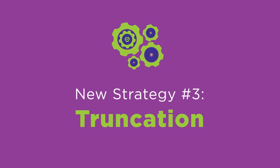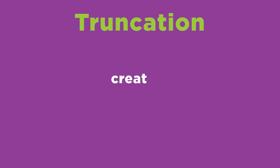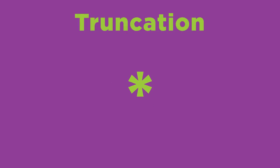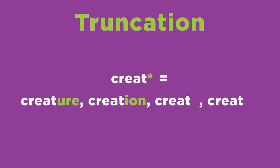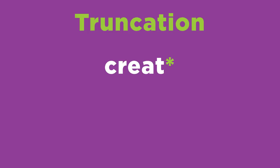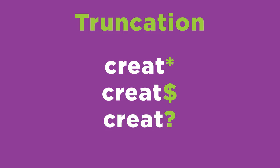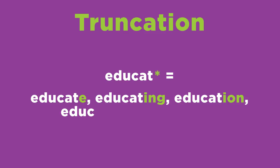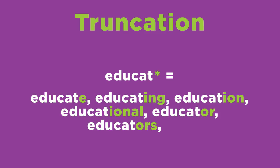Our next strategy is truncation. Truncation involves using special symbols within a search term to improve the quality and quantity of your search results. Truncation uses a symbol at the end of a word stem to provide for all variations of the word. The most commonly used truncation symbol is the asterisk, but some search engines or library databases may use a dollar sign or question mark. For example, a search for educat* will receive results that use the terms educate, educating, education, educational, educator, educators, and so on.